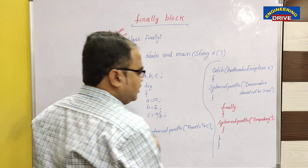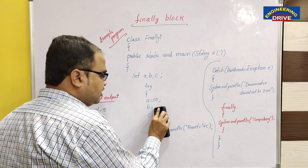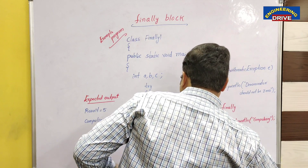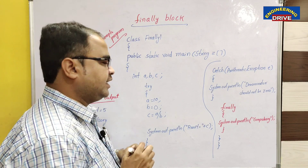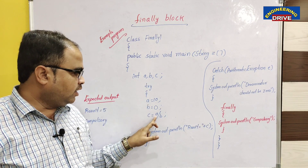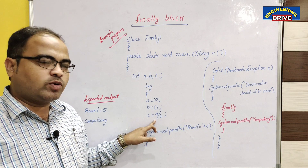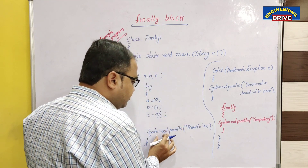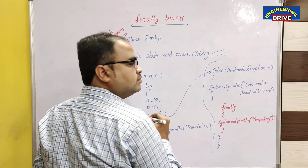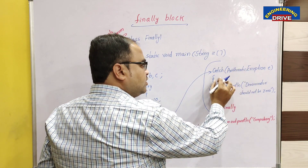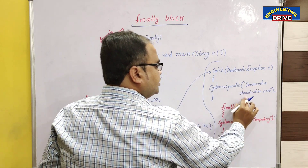Now the second case: let me generate an exception in the try block. When an ArithmeticException is triggered — instead of b being 2, let me assign the value of b as 0. Now in this situation, 10 divided by 0 is a division by zero error, which is a runtime error — the ArithmeticException. In this case, control will not reach the println statement; it will go directly to the catch block, which catches ArithmeticException.